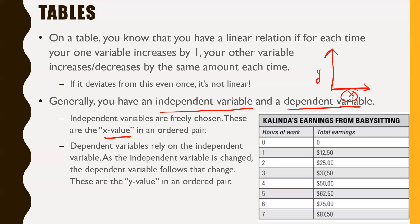In the table we were given here, it shows Kalinda's earnings from babysitting. Her hours of work — what she can kind of control — would be her x, and her total earnings would be y. As she increases the amount of hours of work she does, that's going to increase her total earnings as well.